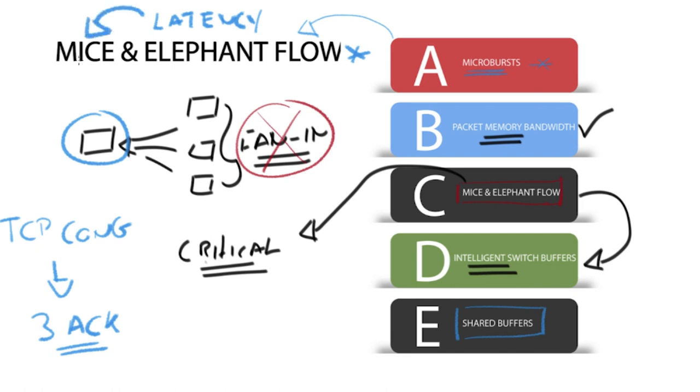On the other hand intelligent buffers understand the types of flows and schedule accordingly. With intelligent buffers elephant flows are given early congestion notification and under stress the mice flows are expedited. This offers a much better living arrangement for mice and elephant flows to operate together on the network.